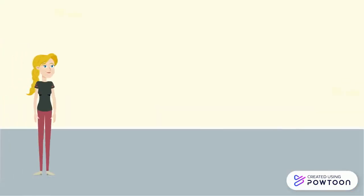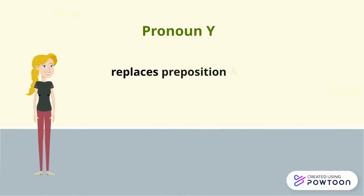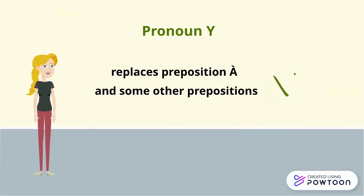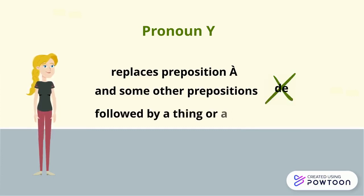Then you have the pronoun y. It replaces the preposition à, and some other prepositions such as dans, en, au, sur — but not de — followed by a thing or a place, not a person.